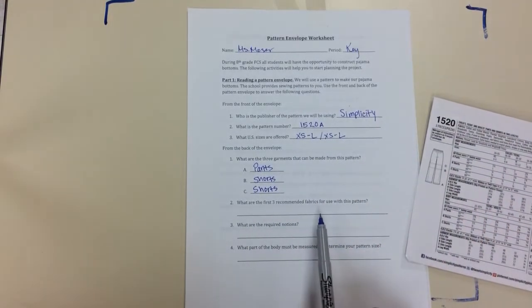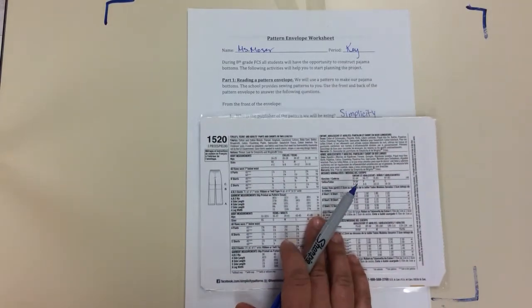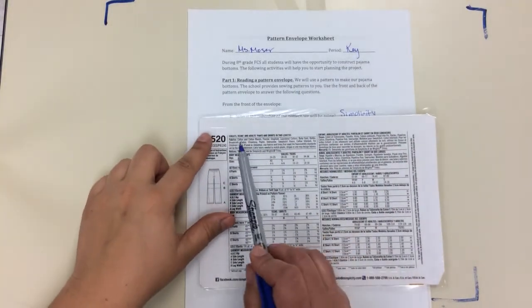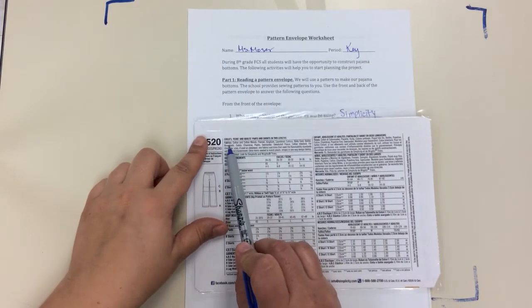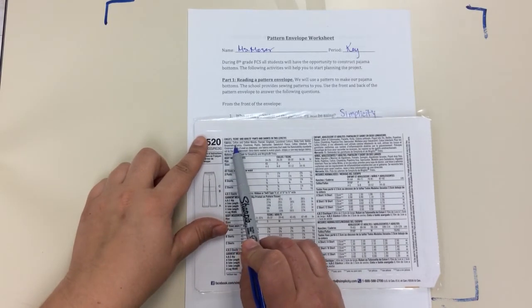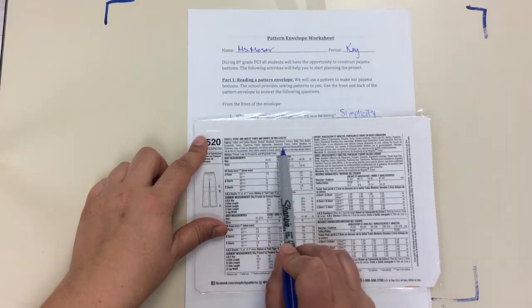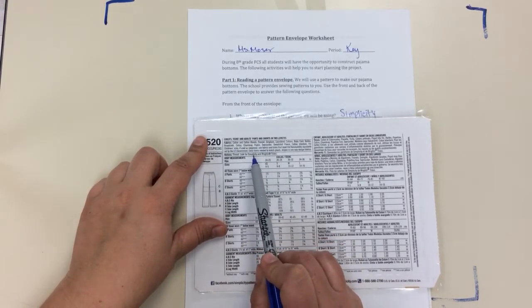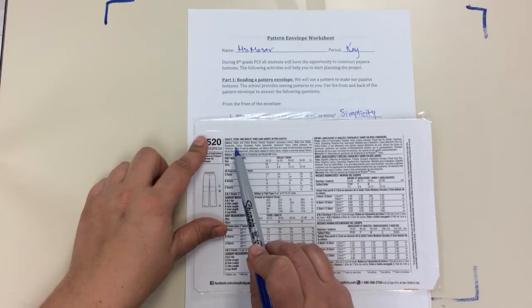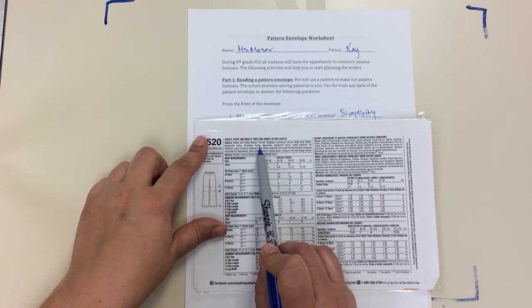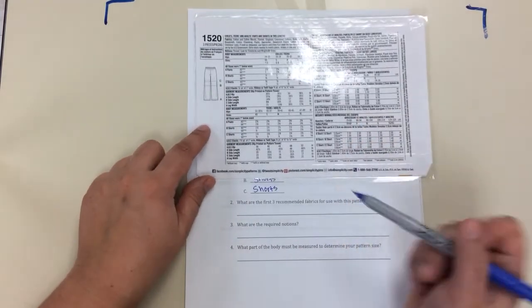The next question is asking what is the recommended fabric. When you go purchase a pattern you have to make sure that you're choosing fabrics that are appropriate for that project. When we look at the envelope here, I'm just asking for you to find the first three. So the first three are cotton, cotton blends, and flannel. There's a bunch of other fabrics that are also appropriate for this project, but we are using cotton, cotton blends, and flannel, so those are the three that we're going to jot down.